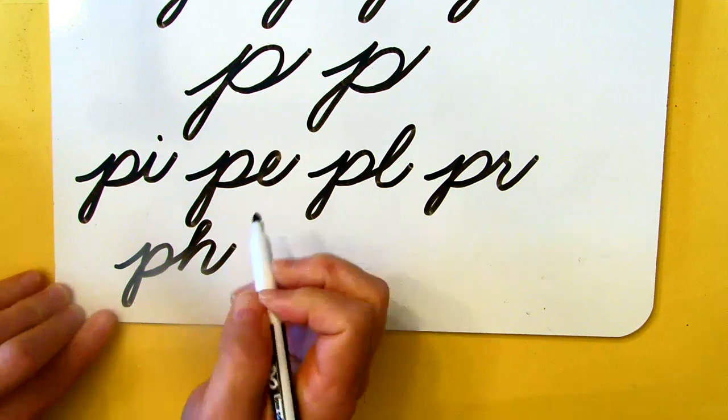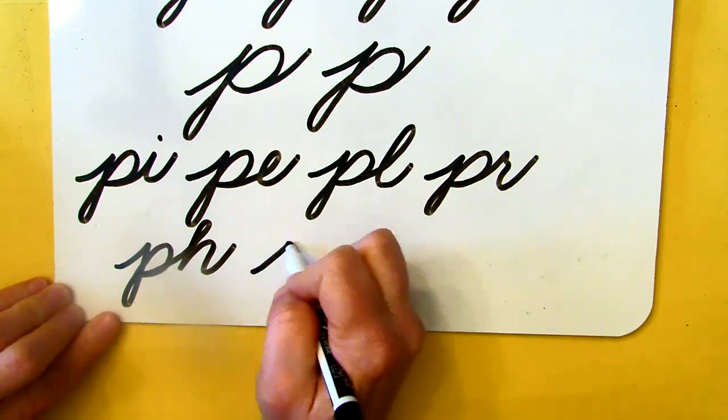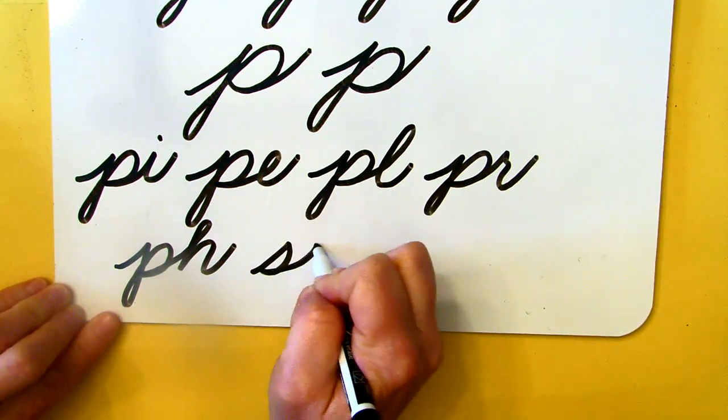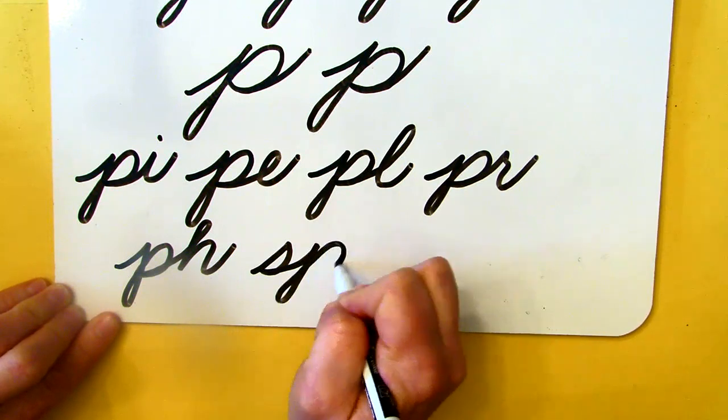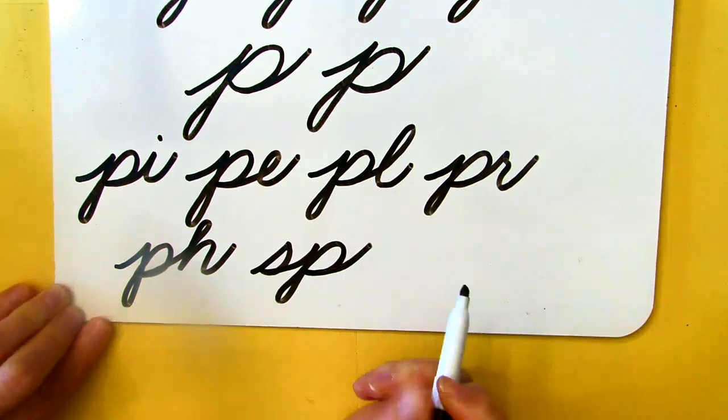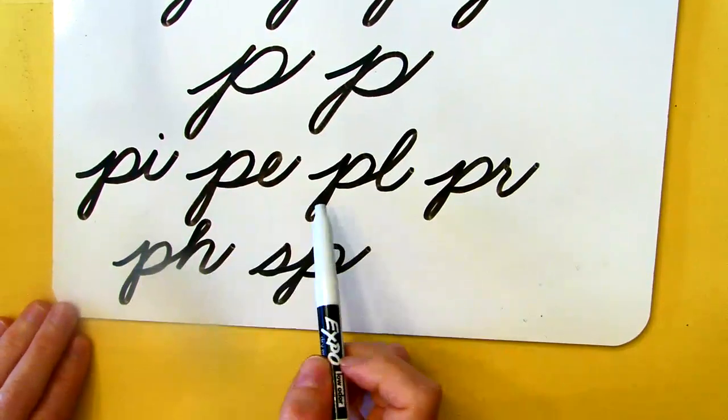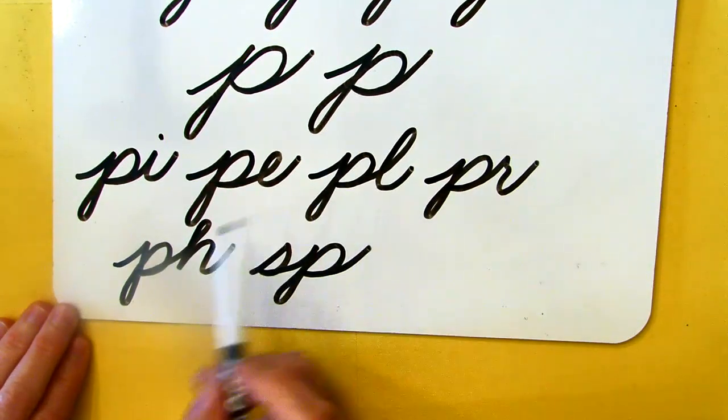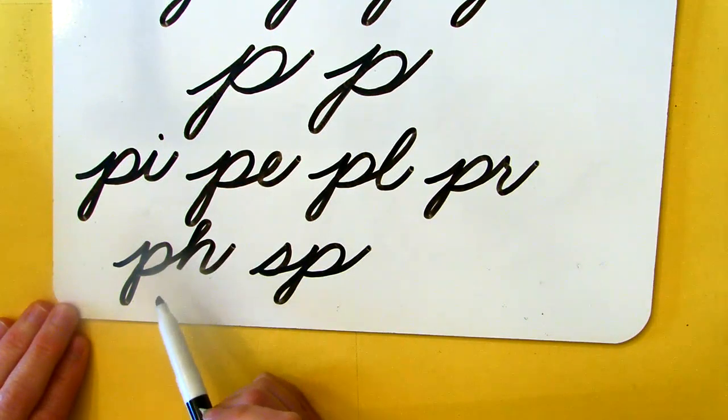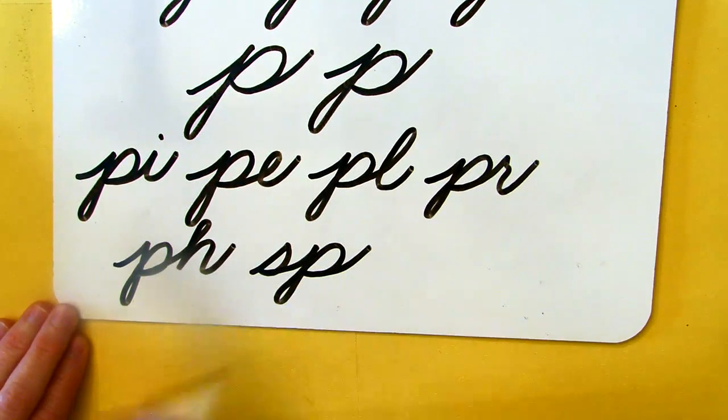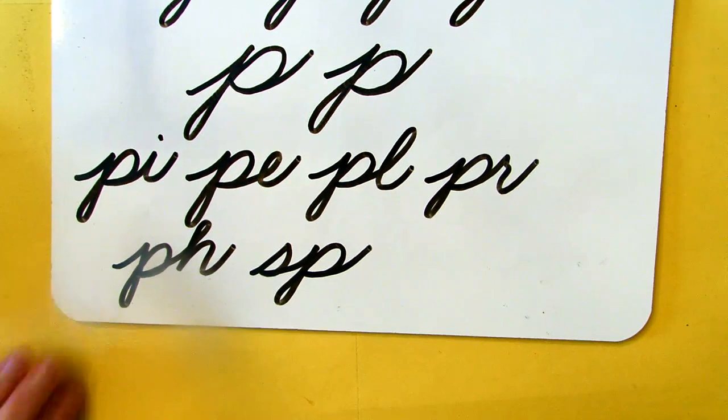I'm not going to tell you what they are. Check it out. If you read P-I, P-E, P-L, P-R, P-H as in phone, and S-P as in spelling, you're right. You're getting very good at reading cursive.